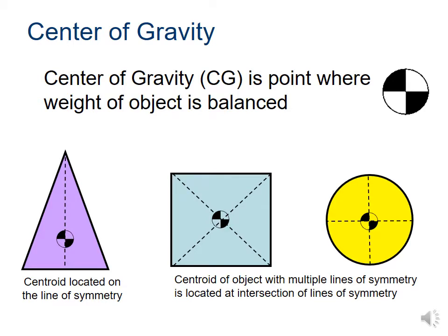On commercial aircraft especially, the baggage and load need to be placed in exactly the right area to maintain the center of gravity of the aircraft. That aircraft is going to have an expected center of gravity, and that's going to help the pilot control it in the best way possible.